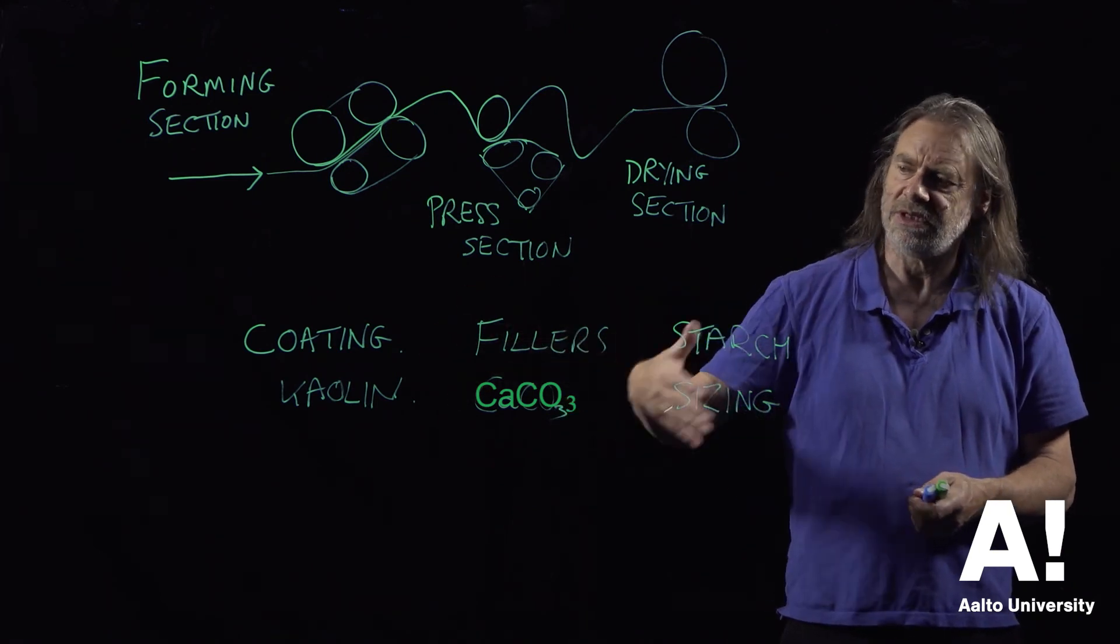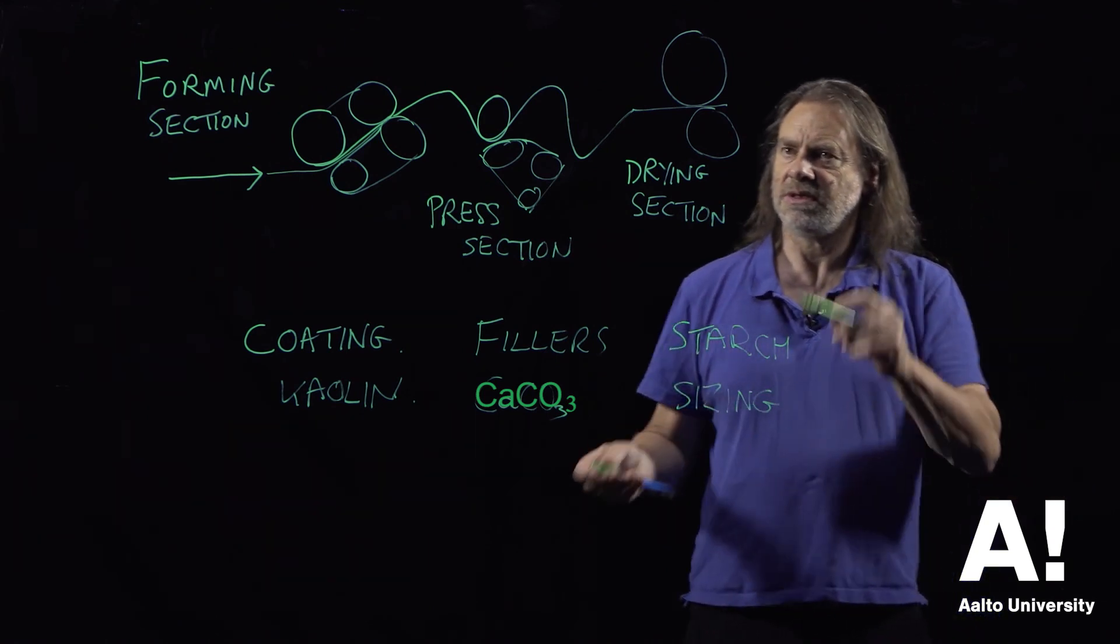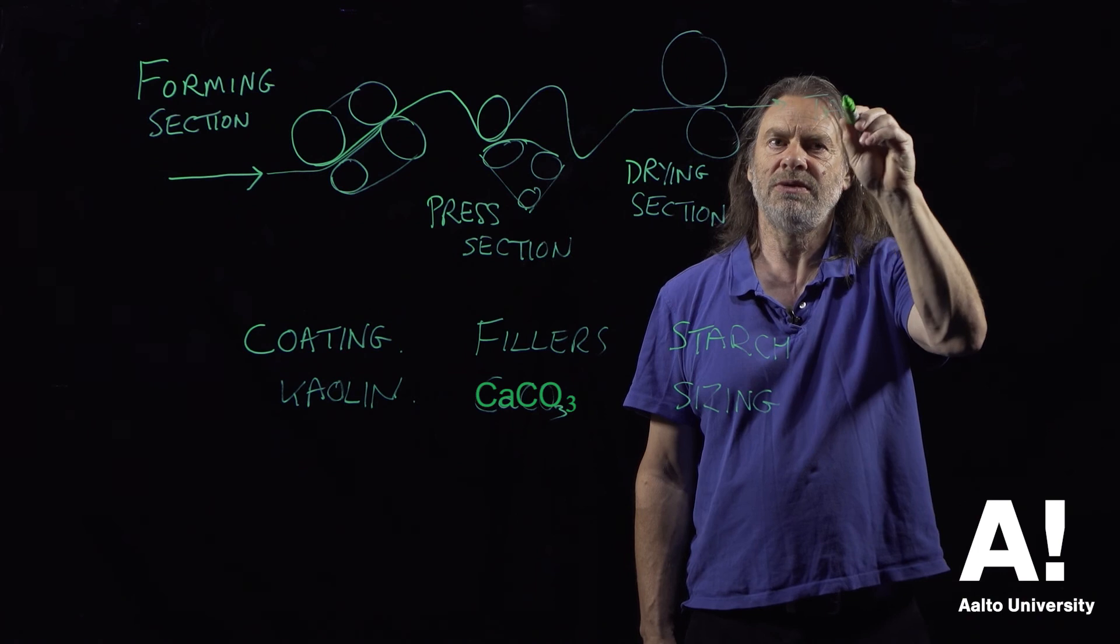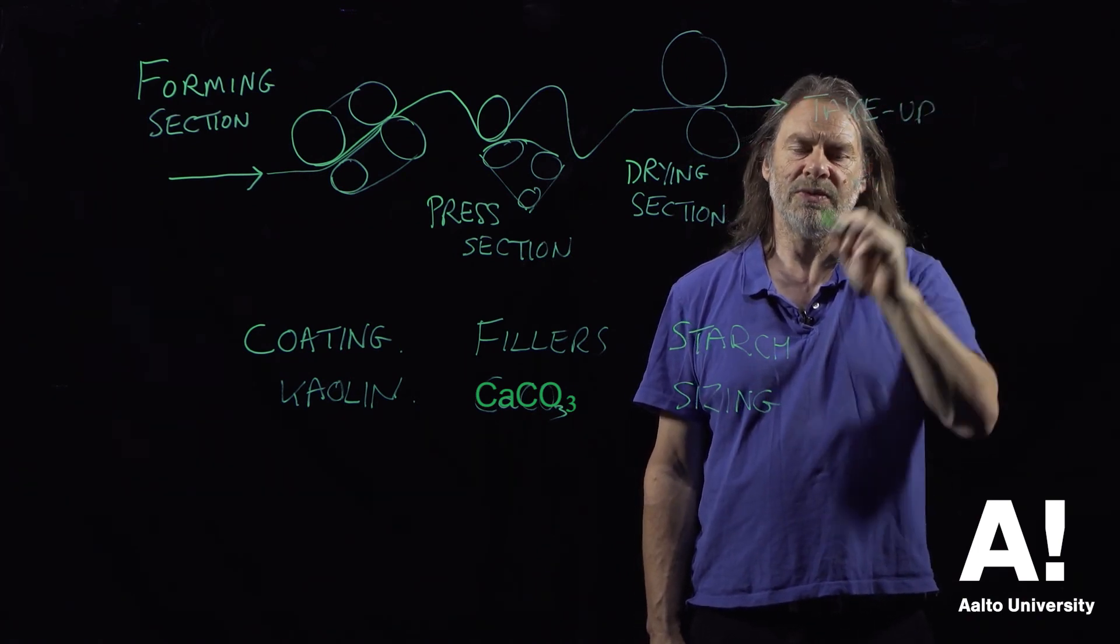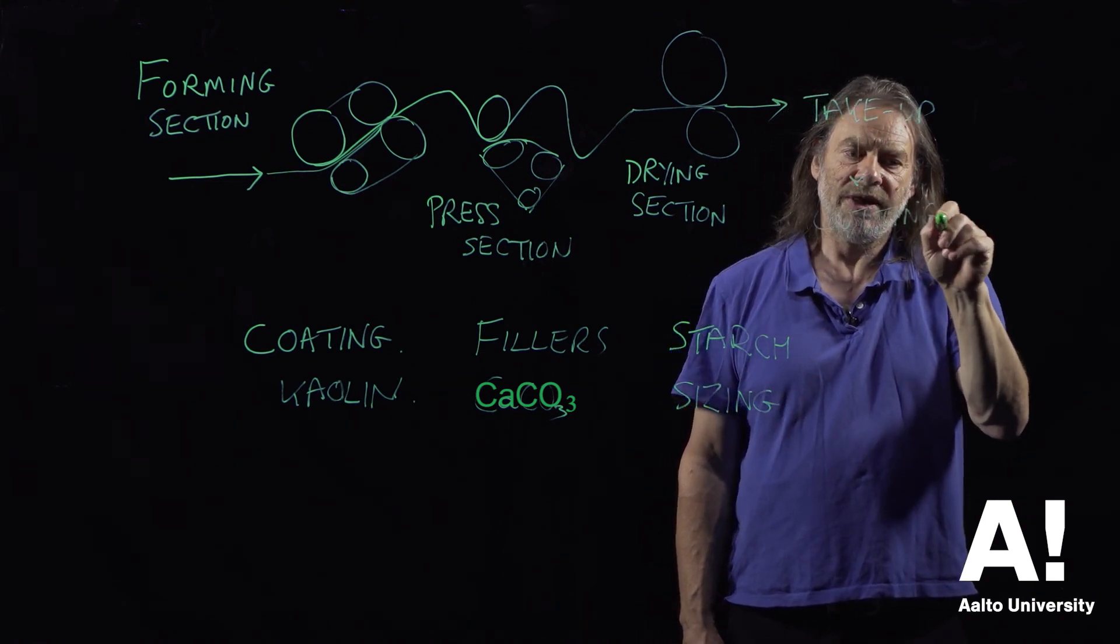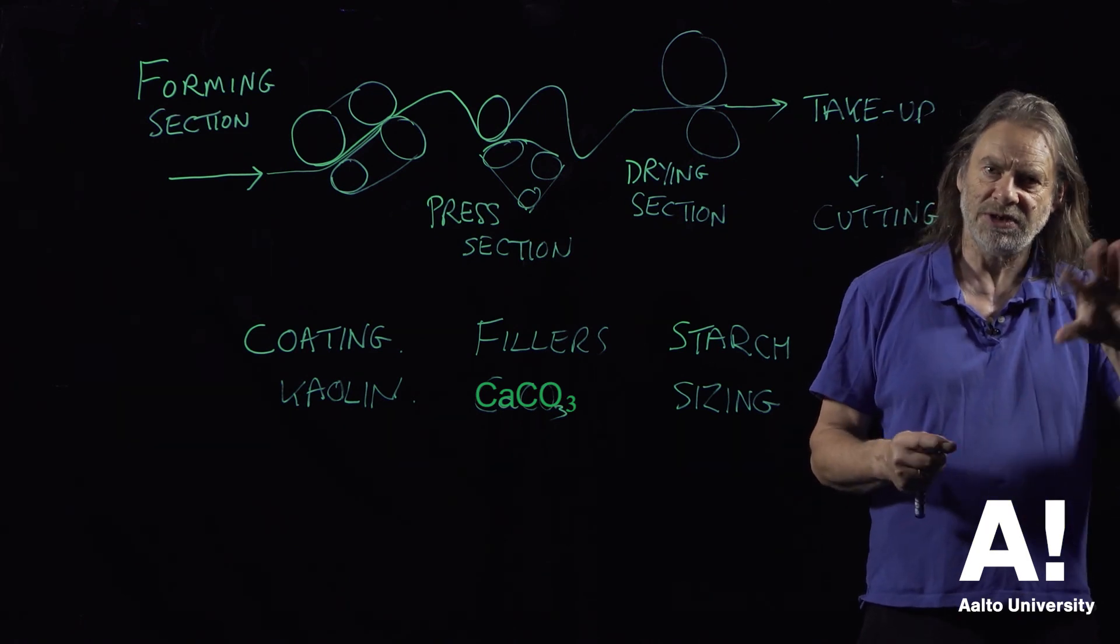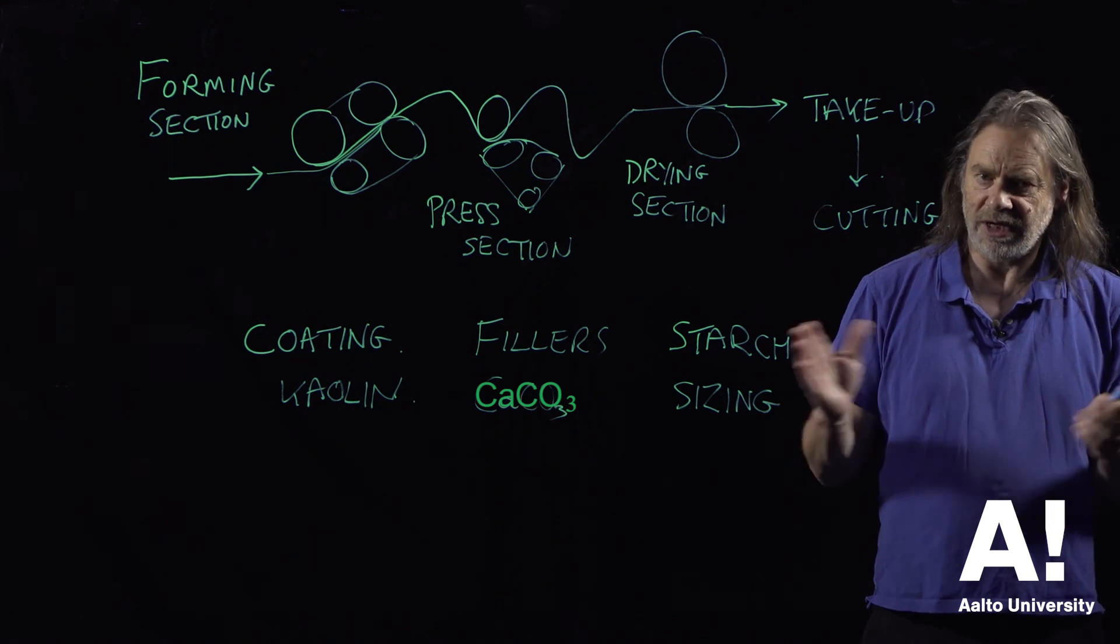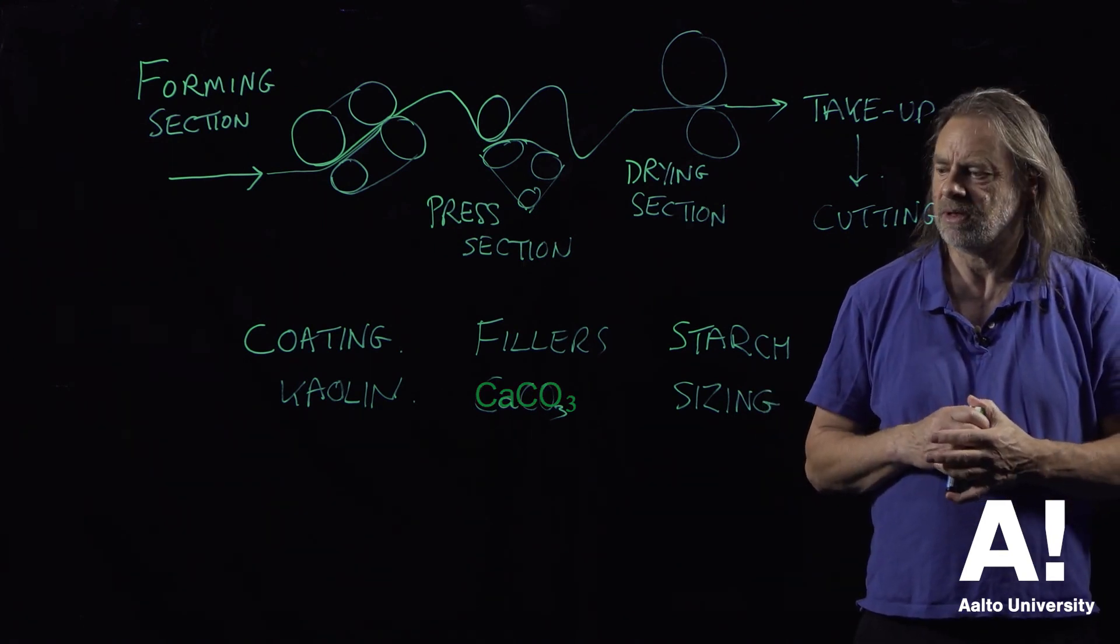These additives have a very important function. As I say, having gone through the drying section, we then come to the take-up reel. After that, we go through a series of cutting processes where that reel is unwound and goes through the paper-slitting machines, and it's then wound onto the reels that are actually used for transporting the paper to the printing sites.